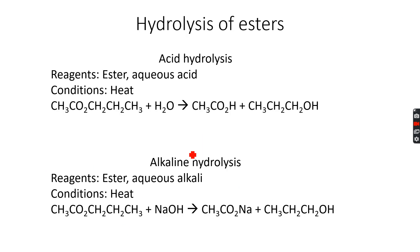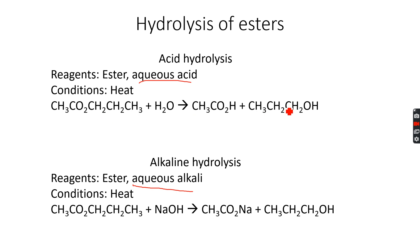Now we are going to move to hydrolysis of esters. Hydrolysis is the breakdown of compounds using water. There are two types: acid hydrolysis and alkaline hydrolysis. Both have the same condition — heat — however the reagents are aqueous acid for acid hydrolysis and aqueous alkali for alkaline hydrolysis. In acid hydrolysis, you get the carboxylic acid plus the alcohol back.